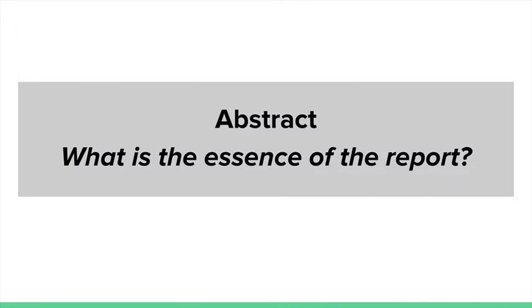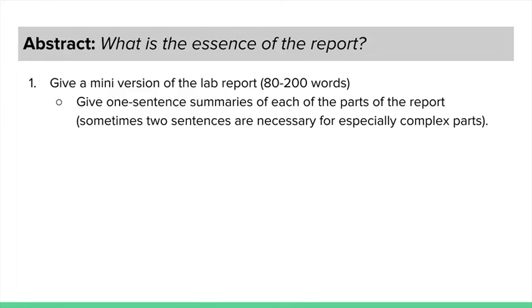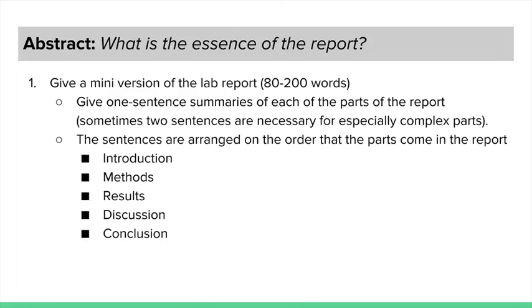Okay, on to the abstract. The abstract is the essence of the report. It's a one paragraph, 80 to 200 word summary of your report. Sometimes you can go up to two sentences for each part of the lab report, but generally one sentence per section of the lab report will suffice.